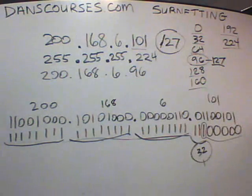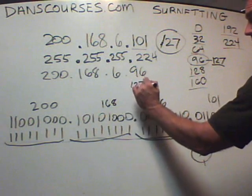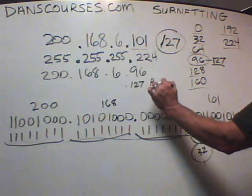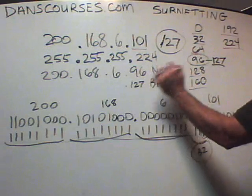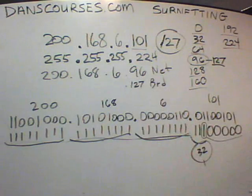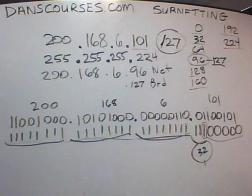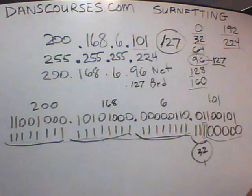The broadcast address in that network will be .127. The network address is .96. So in a slash 27, that's the result — that is essentially the magic number at work. In the next video, we're going to solve problems according to that.